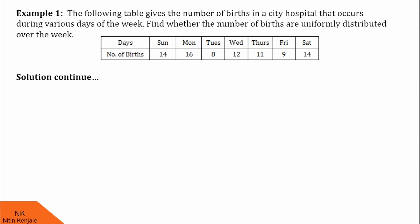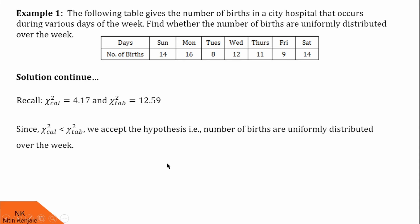Now, in the final step, we compare the tabulated value with the calculated value. Recall that chi-square calculated is 4.17 and chi-square tabulated is 12.59. Since chi-square calculated value is less than chi-square tabulated value, we accept the null hypothesis. That is, number of births are uniformly distributed over the week. I hope guys you understood this example.